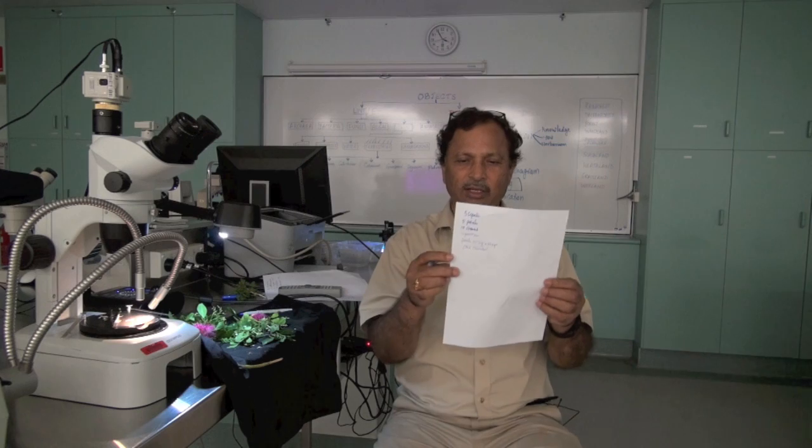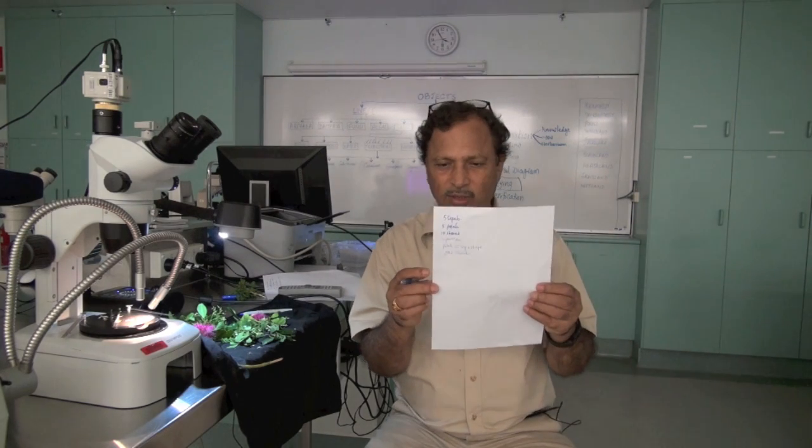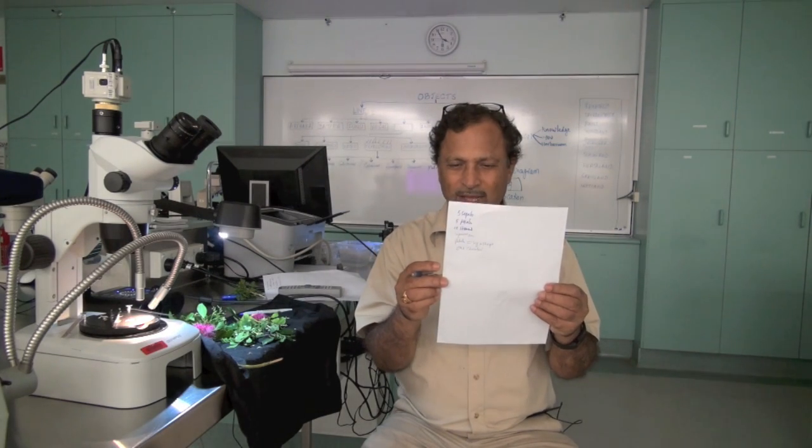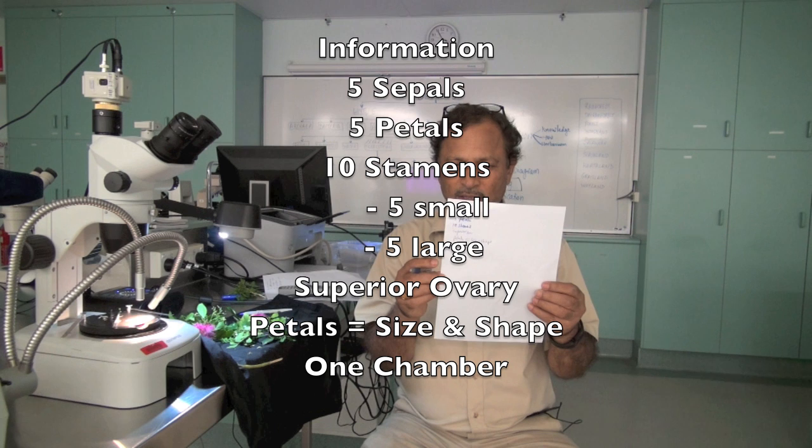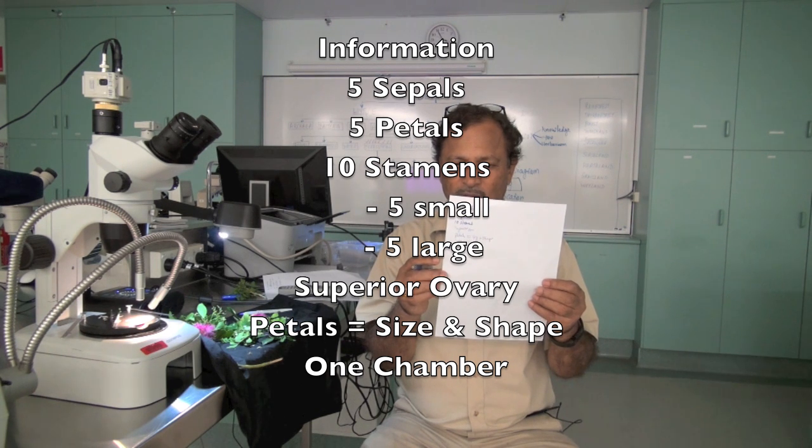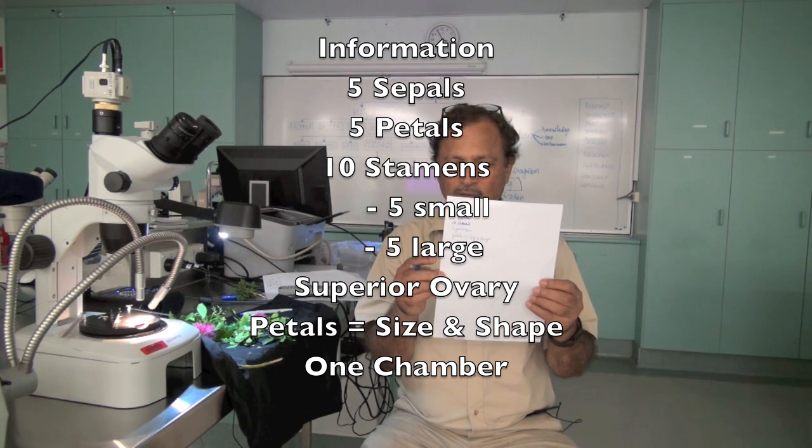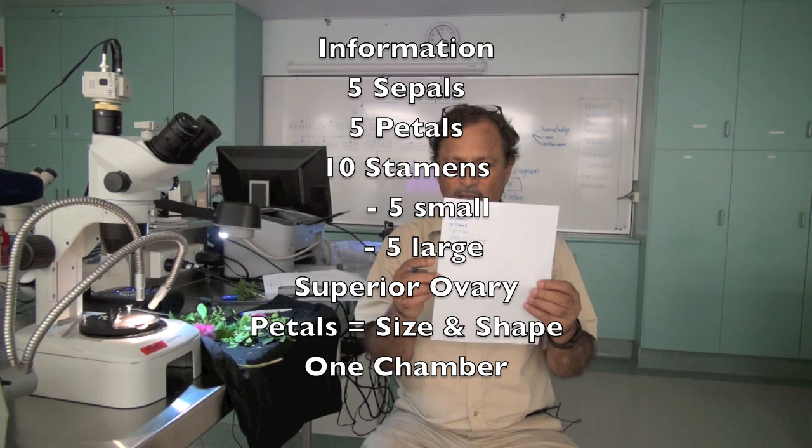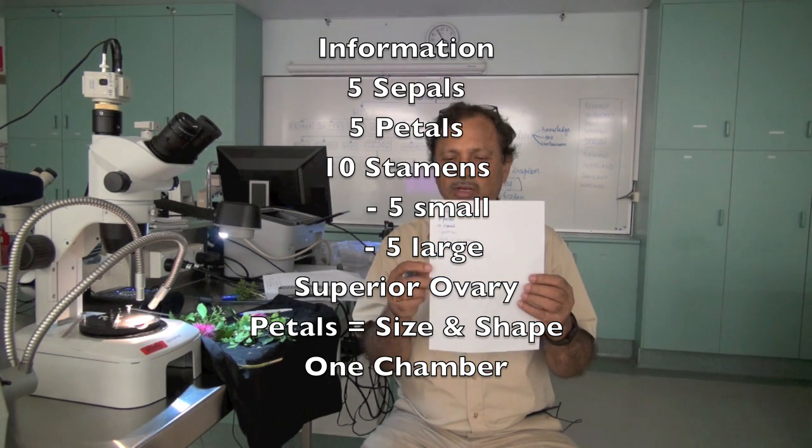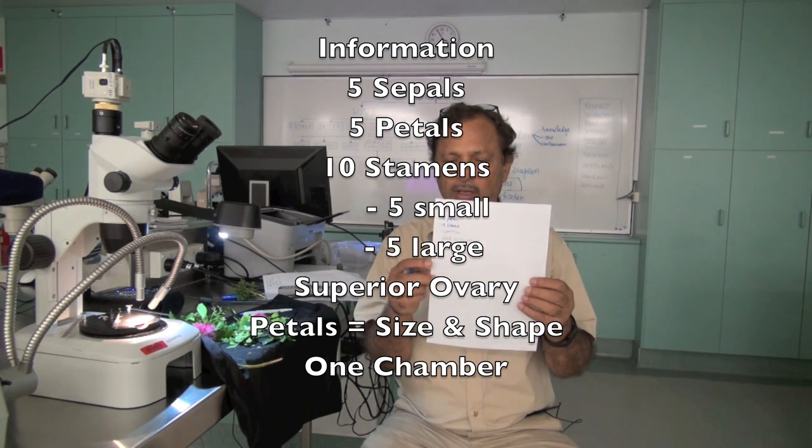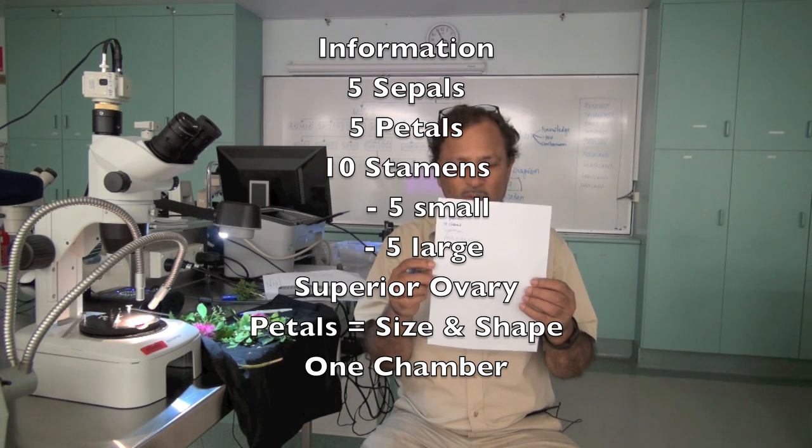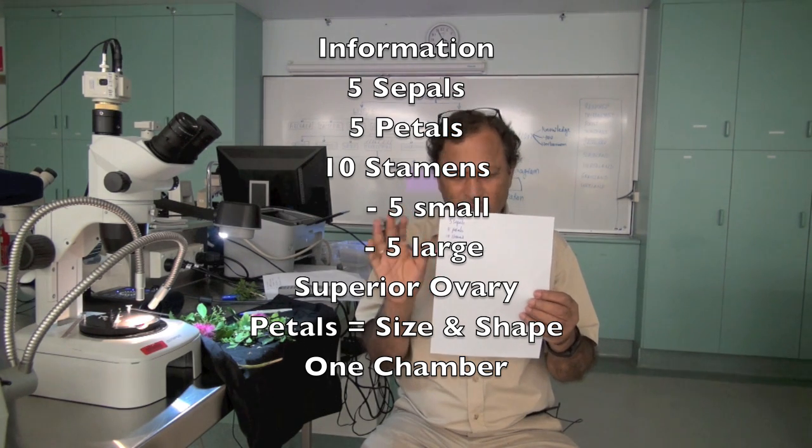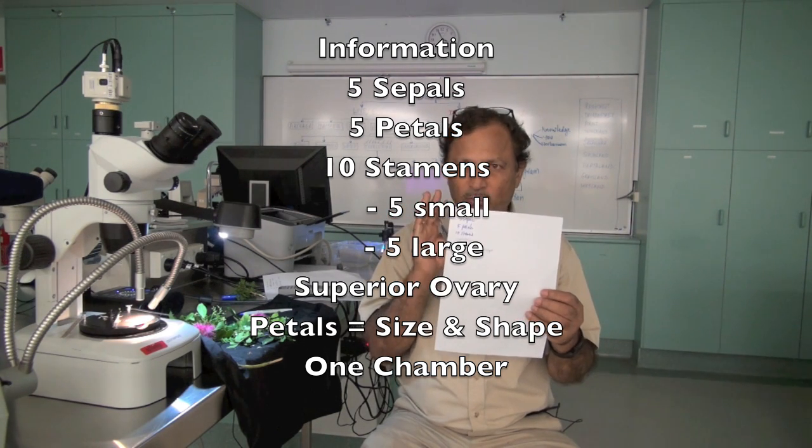So that's the information we collected. It's got five sepals, five petals, ten stamens—five are small, five are large—and the superior ovary. And the petals are of similar size and shape. And then it has got one chamber. It wasn't very clear, it looks like there is only one chamber.